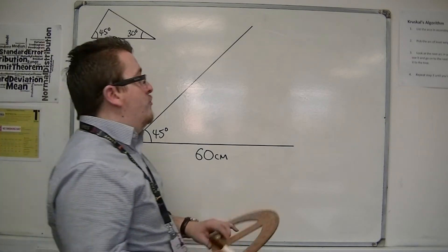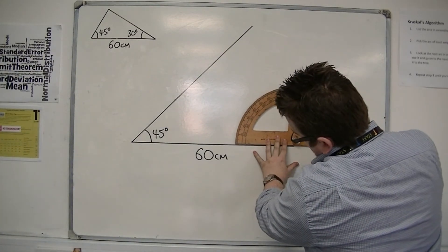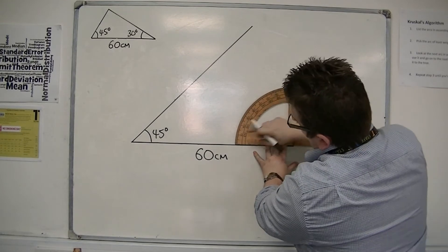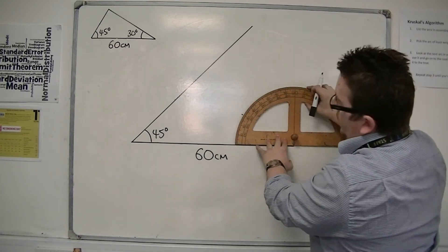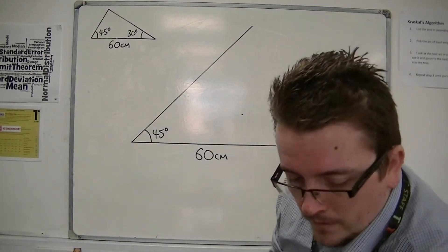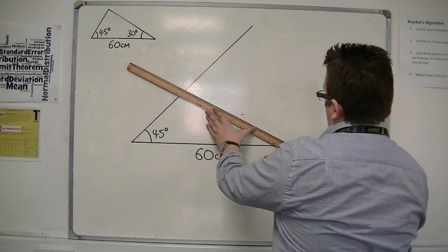And then I'm going to measure a 30 degree angle from the other corner. 30 degrees. This time I'm going to be working from the outside here. There's my 30. Make a little mark. Then join up the corner with my mark.